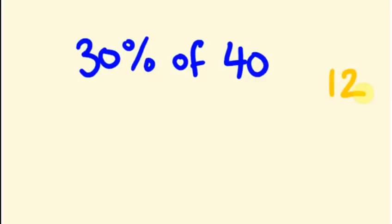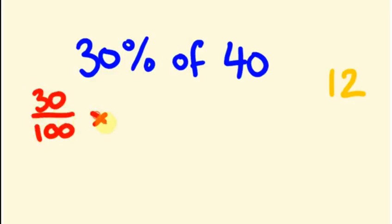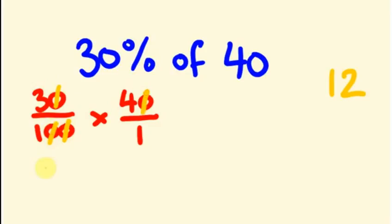Simply, this is an easier way to find out the percentage within a few seconds. So what we will be doing is 30% of 40. We usually write it as 30 divided by 100, into 40 divided by 1. We will be cancelling all those unwanted zeros — the zero of 30 gets cancelled with a zero of 100, and the zero of 40 gets cancelled with the other zero of 100. So the remaining is 3 into 4.